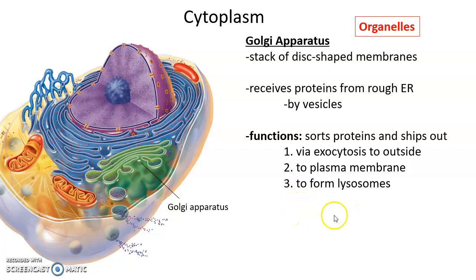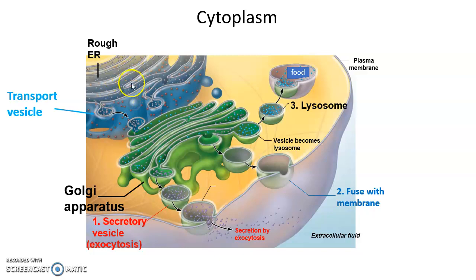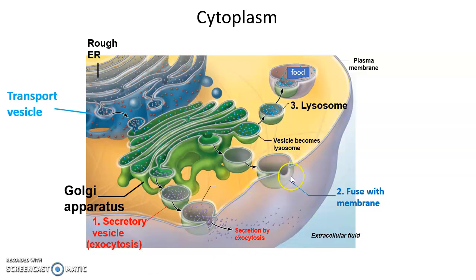The Golgi can also form lysosomes, which hold digestive enzymes. To recap: proteins produced by the rough ER are sent via vesicles to the Golgi, where they are sorted, modified, and sent out either by vesicles for secretion outside the cell by exocytosis, or sent to the plasma membrane — where the proteins embedded in the vesicle's lipid bilayer become part of the plasma membrane when the vesicle fuses — or to form lysosomes filled with digestive enzymes that must be isolated so they don't damage the cell.